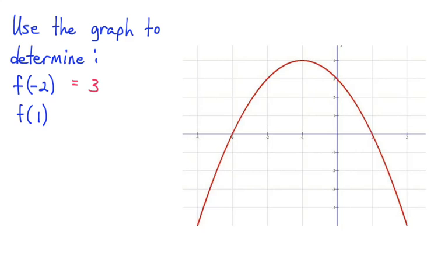Let's do the same thing for f of 1. So 1 is an x value, so if I trace on the graph to where x equals 1, I can see that the y value of the graph there is 0. Okay, now let's do it backwards.